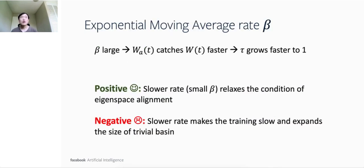Similarly, a small β or smaller exponential moving average rate also have pros and cons. On the positive side, a small β will relax the condition of eigenspace alignment and makes it easy to happen. On the negative side, a small β makes the training slower and will expand the size of the trivial basin. Please check the detail in the paper.